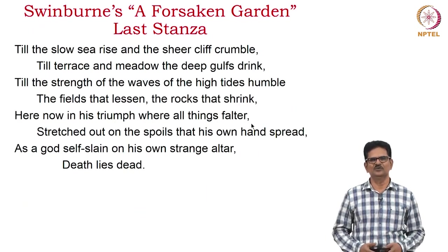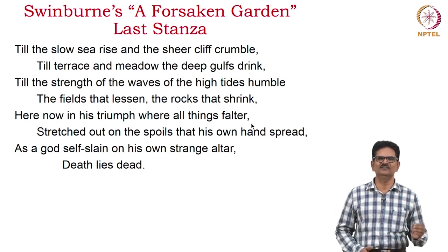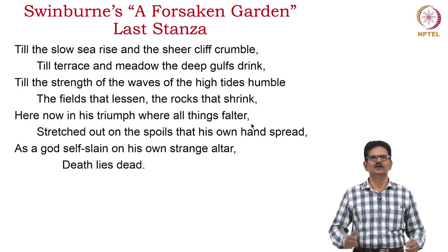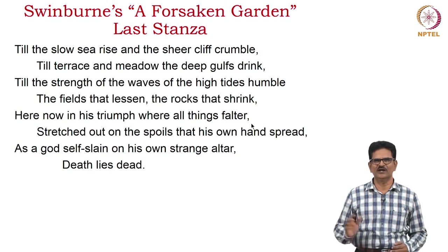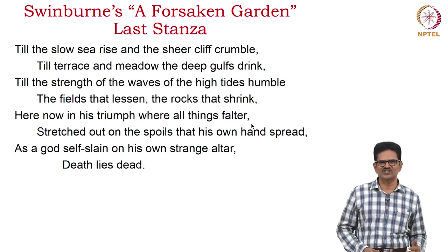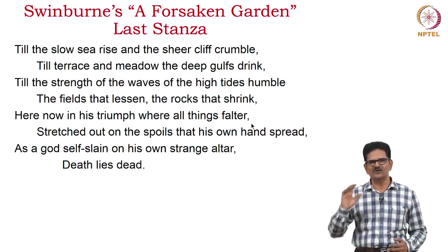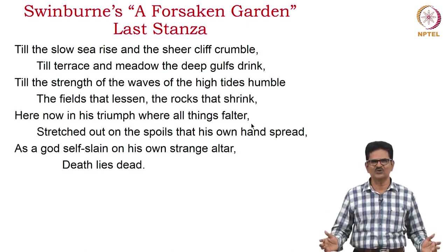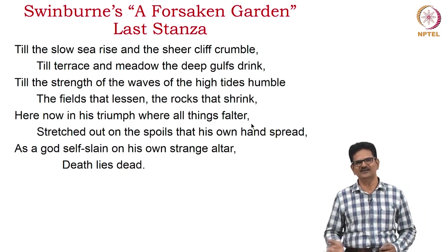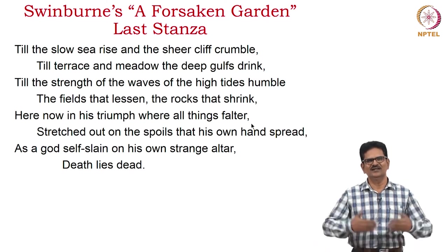We have an example from one of the practitioners of the Art for Art's Sake movement — Swinburne. His poem is called A Forsaken Garden, and we have the last stanza alone here: 'Till the slow sea rise and the sheer cleft crumble, till terrace and meadow the deep gulfs drink, till the strength of the waves of the high tides humble the fields that lessen, the rocks that shrink. Here now in his triumph where all things falter, stretched out on the spoils that his own hand spread, as a god self-slain on his own strange altar, death lies dead.'